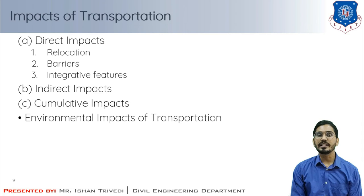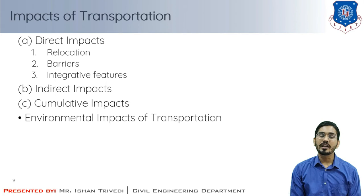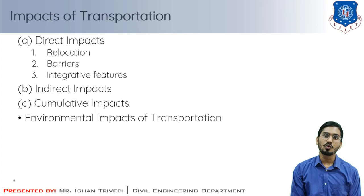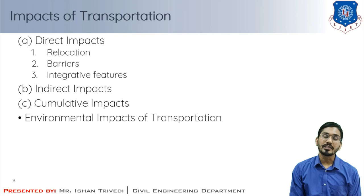Regarding direct impacts — specifically relocation effects — these include physical, emotional, and financial stresses, and the removal of formal and informal social networks. Vulnerable businesses affected include grocery shops, banks, shopping centers, gas stations, hotels, motels, and restaurants. Common facilities such as schools, churches, and recreation centers are also affected. Vulnerable population segments include the elderly, low-income families, long-term residents, handicapped persons, minority and ethnic group members, and families with school-age children.